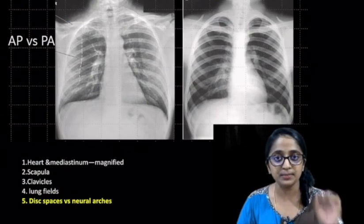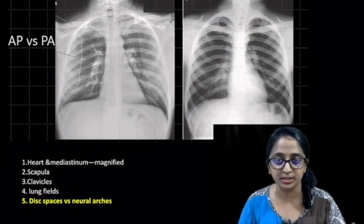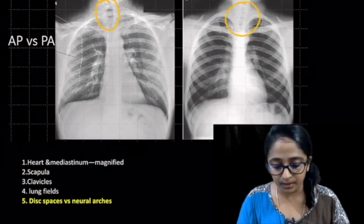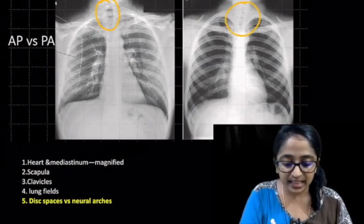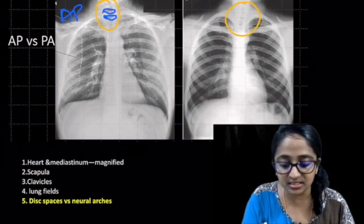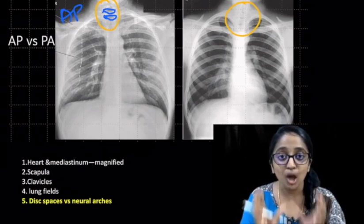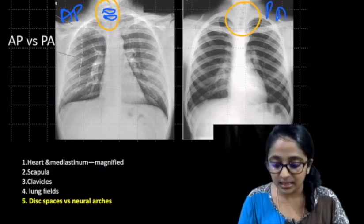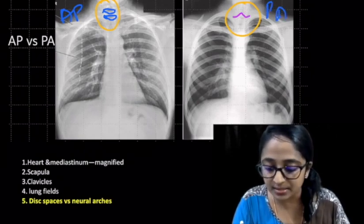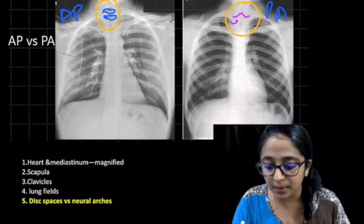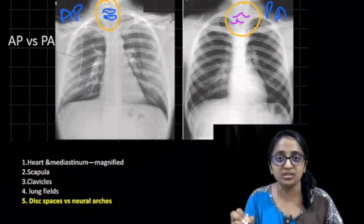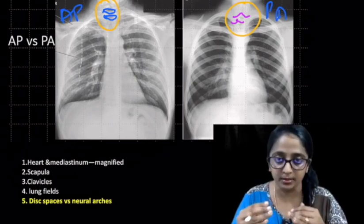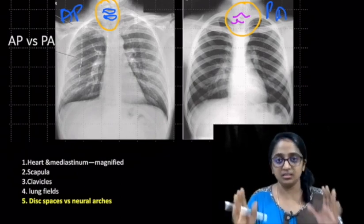The fifth difference between AP and PA projection: by looking at the lower cervical vertebrae, you can see that in the AP radiograph the disc spaces appear loose and more prominent. Whereas in the PA radiograph, it is the posterior elements — the spinous process with the neural arches of the lower cervical vertebra — that appear more prominent. Thus we have discussed the frontal projection in detail.